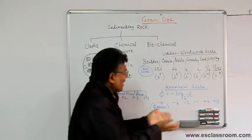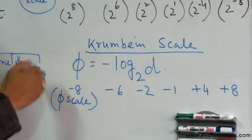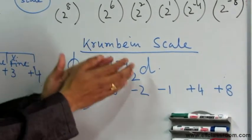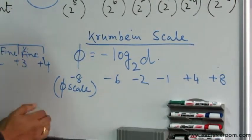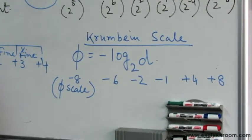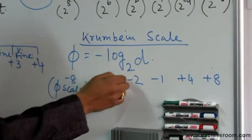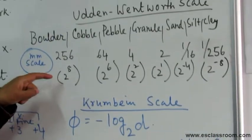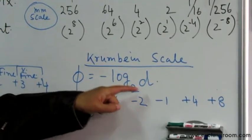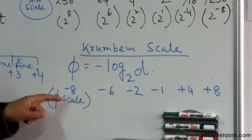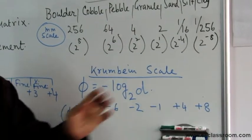For that purpose the concept of the Krumbein phi scale was introduced, where the phi value is the negative logarithm of the grain size in millimeters to base 2. Why base 2? Because all the Udden-Wentworth size boundaries are in powers of 2, so when converted to a log base-2, the values come out as simple integers — either negative or positive.